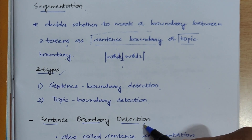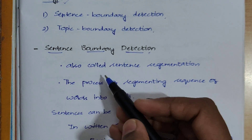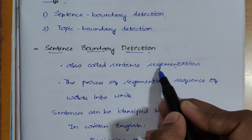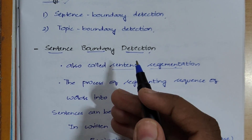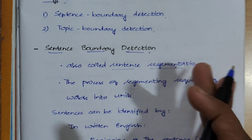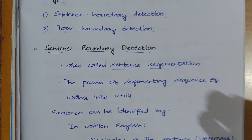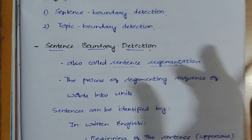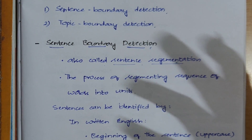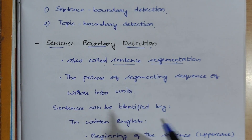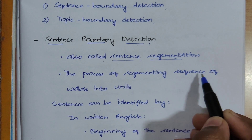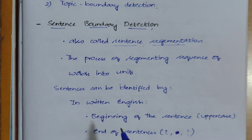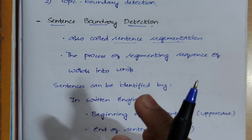First we will discuss sentence boundary detection, also called sentence segmentation. A sentence begins with an uppercase letter and ends with a full stop. We are checking that particular sentence in order to find the boundary of that sentence, to make it easy for systems to understand. This is the process of segmenting a sequence of words into units.